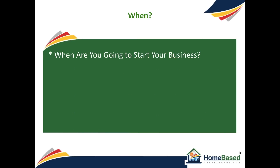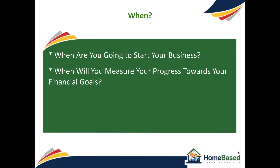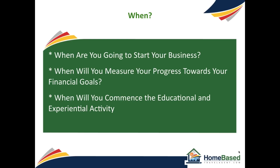Now let's talk about when. When are you going to start your business? While it makes sense that your business plan should start on a certain date, don't let the timing control your decisions to engage your business. When will you measure your progress towards your financial objectives? Your business plan should set aside time to stay on top of your financial progress as your business gains traction. A monthly cash-on-cash income statement is the best way to understand where your business is and where it's heading, and you should schedule this to happen. When will you commence your educational and experiential activity? One of the easiest things to do when starting a business is to overlook investing in the education and experience you need to develop your niche expertise. You should both budget and schedule time to make these happen. Creating a timeline is the best way to make sure all of these things happen — you can schedule time for training, experiences, financial statements, and everything else. They only work if you stick to them, so be realistic when creating your timeline.